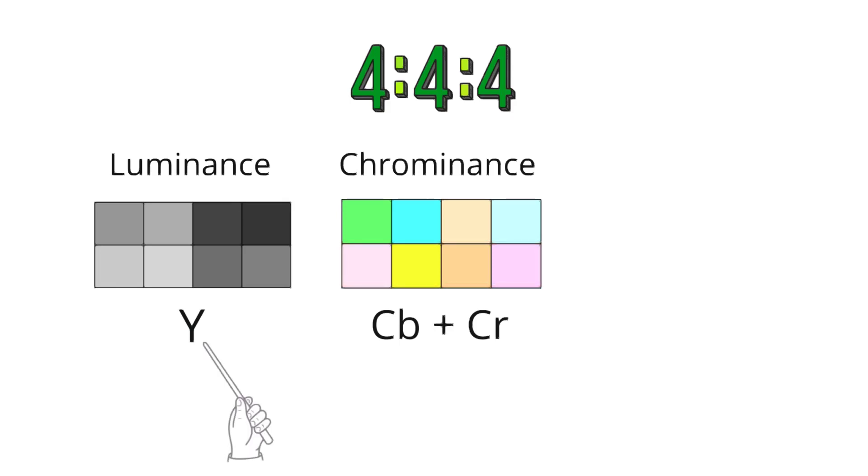In summary, on the left, there is a grayscale image labeled Y, which represents the luma component or brightness levels of the YCbCr color space. In YCbCr, Y stands for the luminance part of the image and is typically represented in shades of gray, where each shade corresponds to the brightness of the color in the original image.